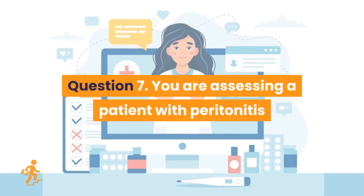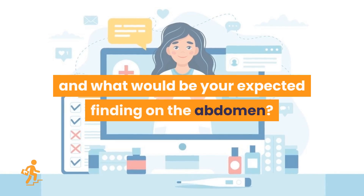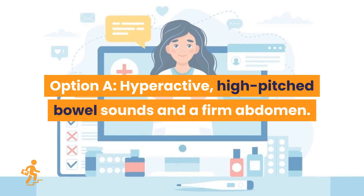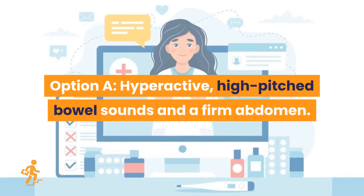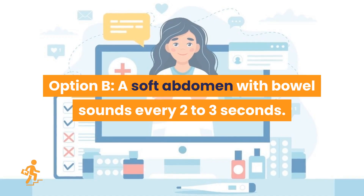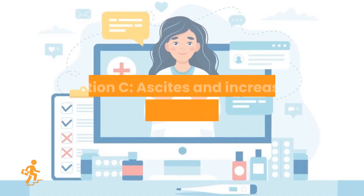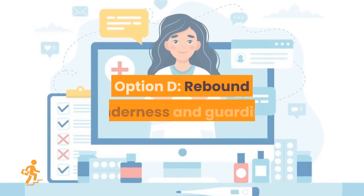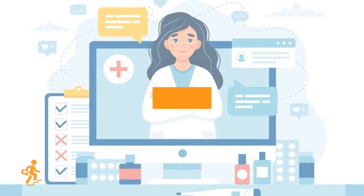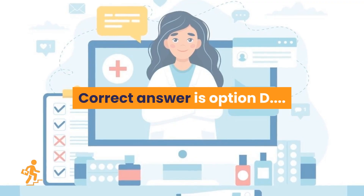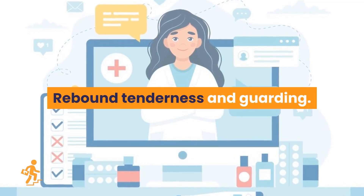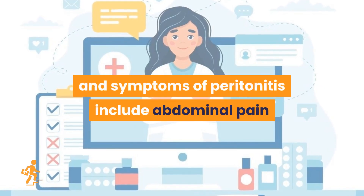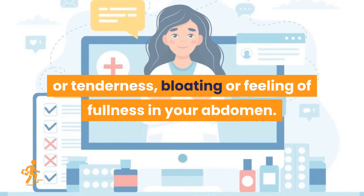Question 7. You are assessing a patient with peritonitis, and what would be your expected finding on the abdomen? Option A: Hyperactive, high-pitched bowel sounds and a firm abdomen. Option B: A soft abdomen with bowel sounds every 2 to 3 seconds. Option C: Ascites and increased vascular pattern on the skin. Option D: Rebound tenderness and guarding. As a nurse you should know the signs and symptoms of peritonitis include abdominal pain or tenderness, bloating, or feeling of fullness in your abdomen.